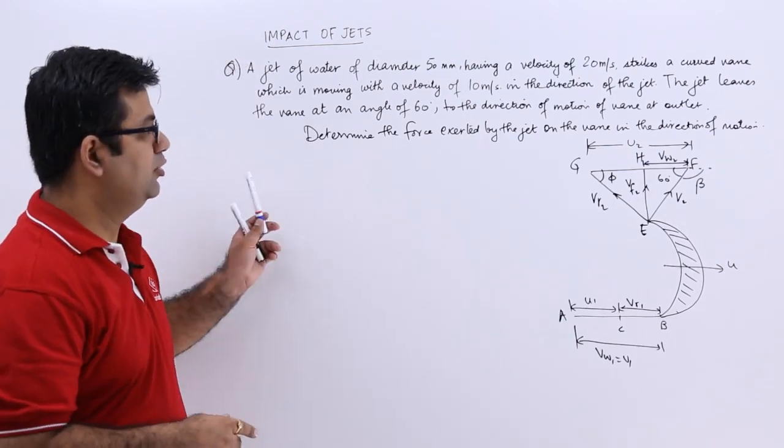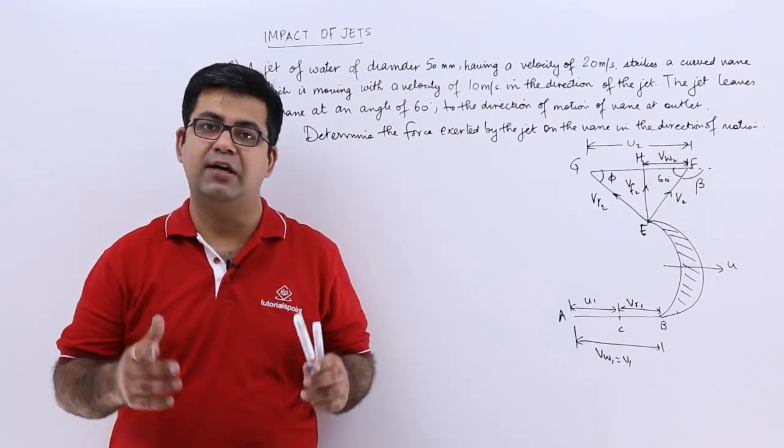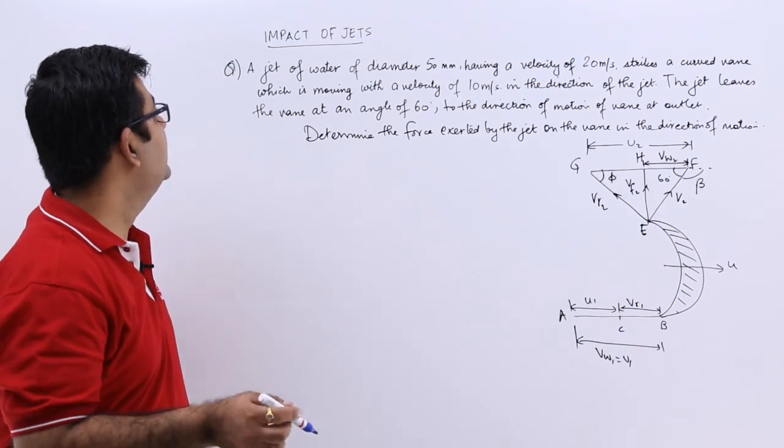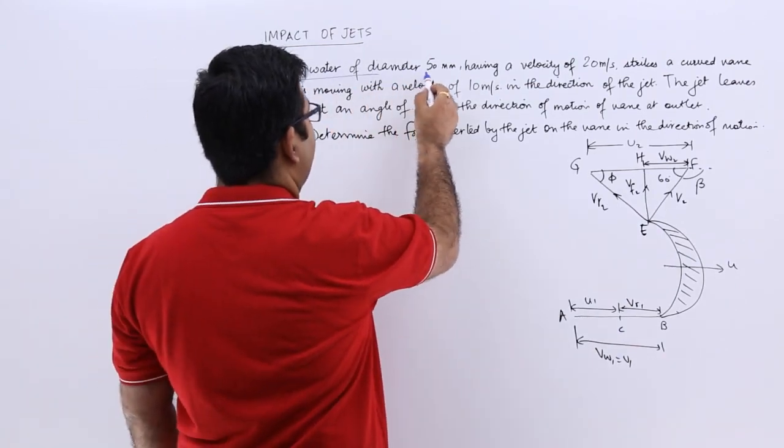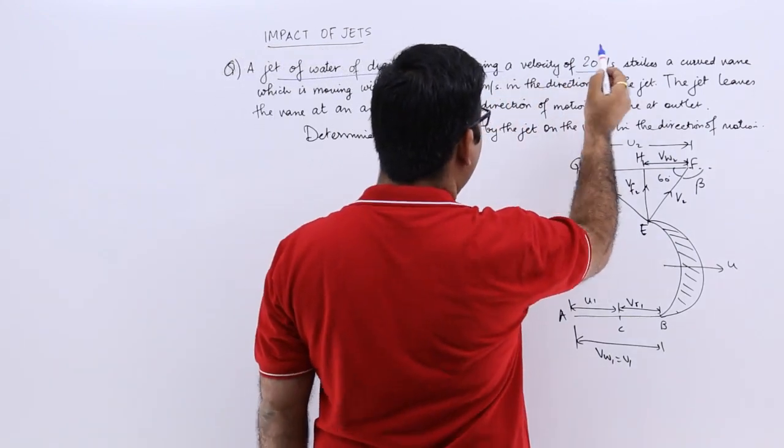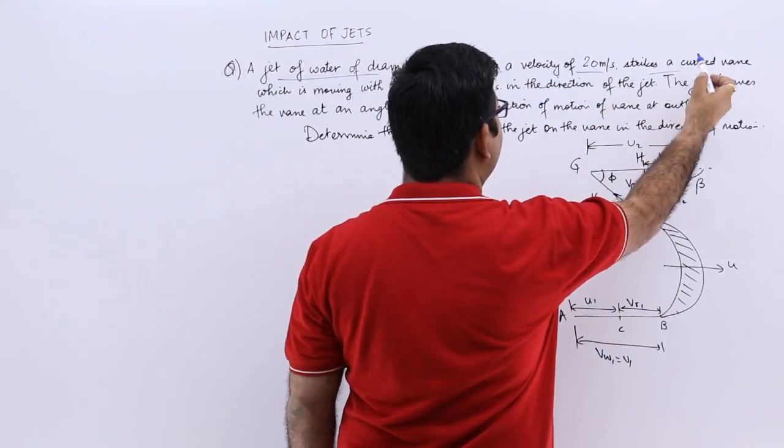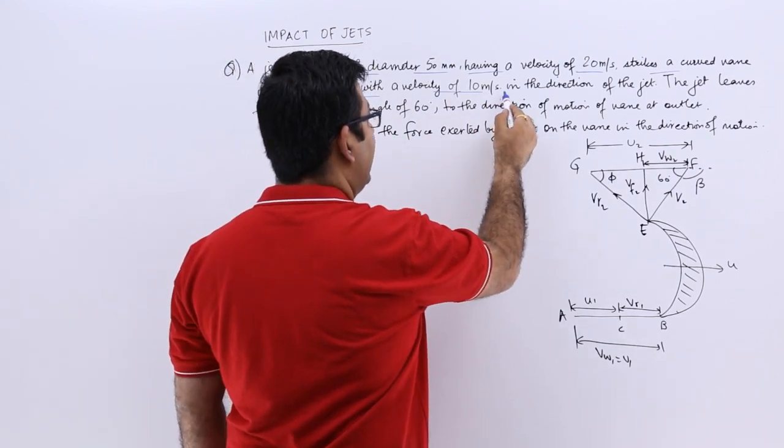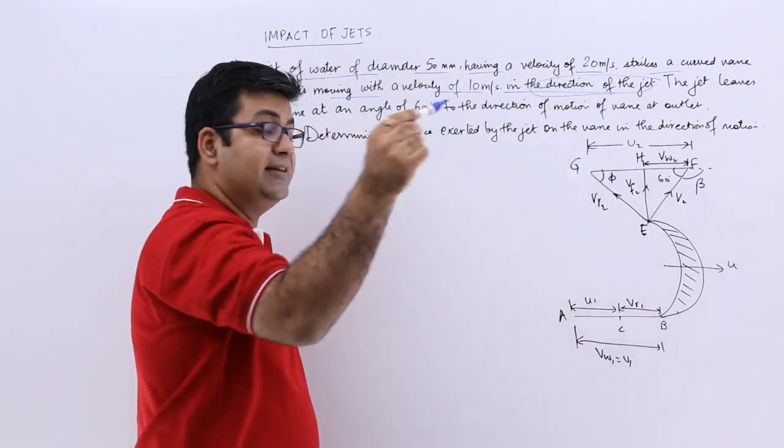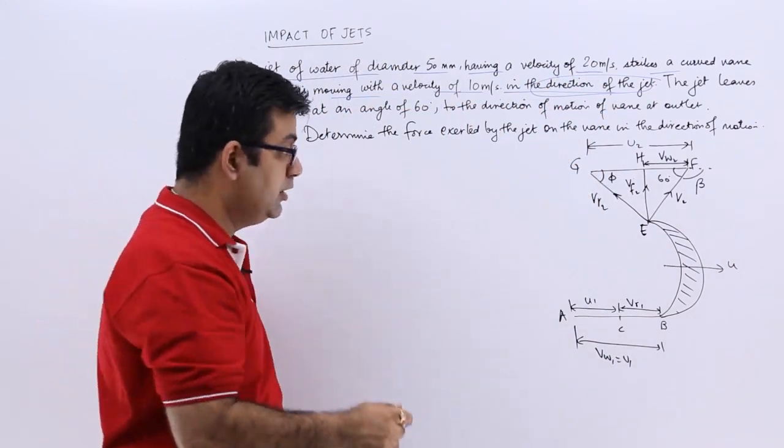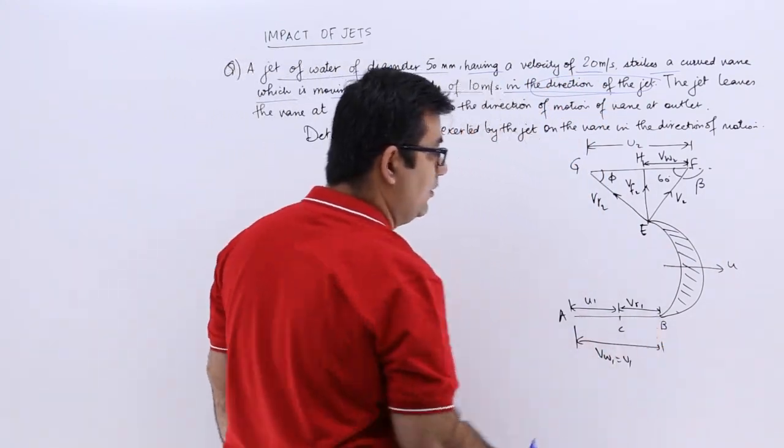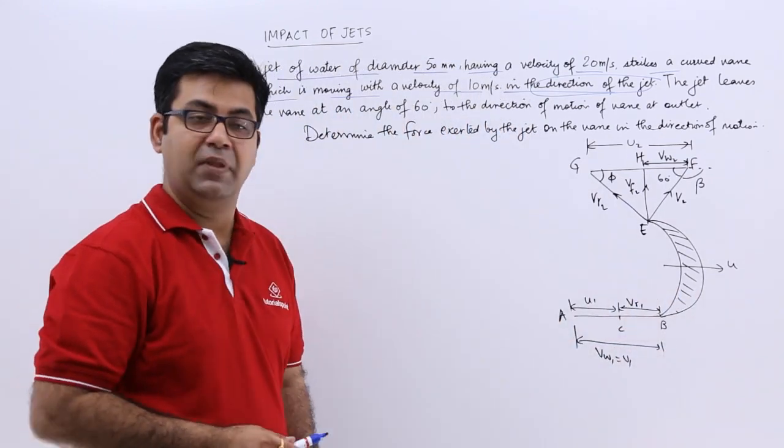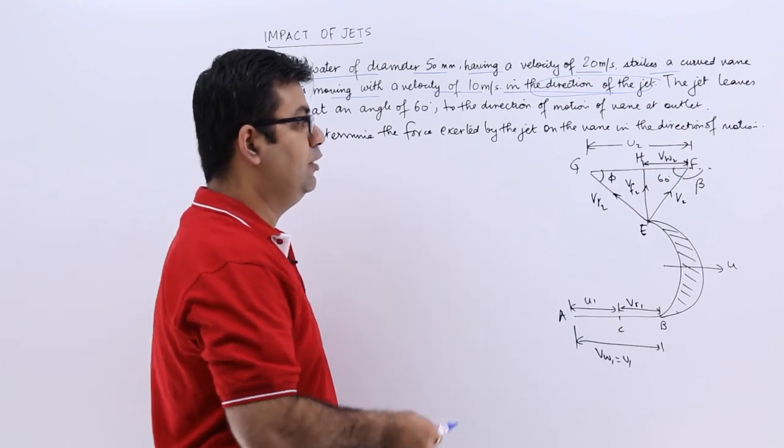Now let's look at one more question on the topic of unsymmetrical curved vane which is moving at a velocity. The question says a jet of diameter 50 mm having a velocity of 20 meters per second strikes a curved vane which is moving with a velocity of 10 in the direction of the jet. So the vane and the jet they are moving in the same direction, so your inlet velocity triangle will be nothing but this line because U and V1 are in the same direction. V1 is not tangential to the blade.